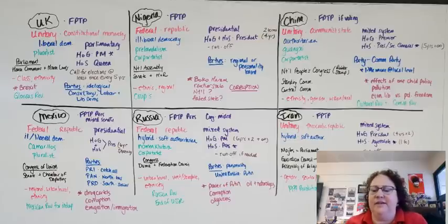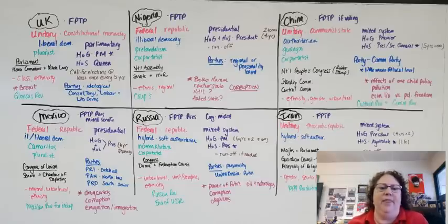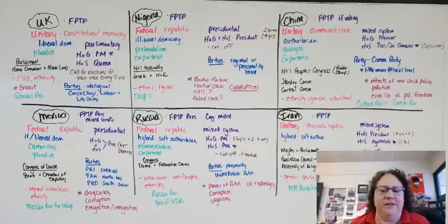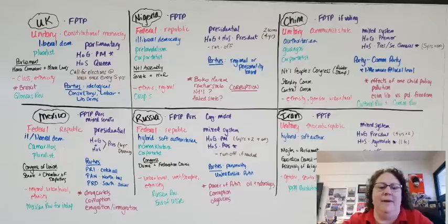Hey guys, this is my quick review for comparative government — the six countries we have to study. I'm going to cover some concepts, but if you want a full concept review I have a separate video on that. One of the best things you can do is take a piece of paper, divide it into six, and think about what you know about each country. I'm going to do these in the order that I teach them, so we're going to start with Mexico.